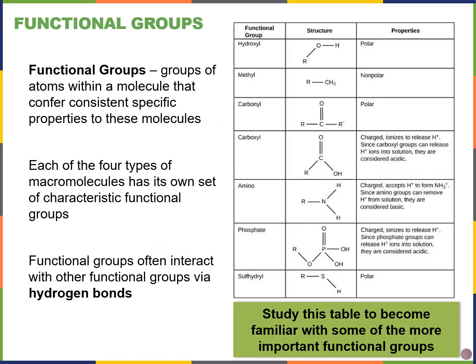Our last topic is functional groups. Functional groups are groups of atoms within a molecule that confer very consistent and specific properties to the molecules that contain them. Each of the four types of macromolecules we'll see in the next chapter — proteins, lipids, carbohydrates, and nucleic acids like DNA and RNA — have characteristic functional groups that give them their properties. They're also often going to interact with one another through hydrogen bonds.